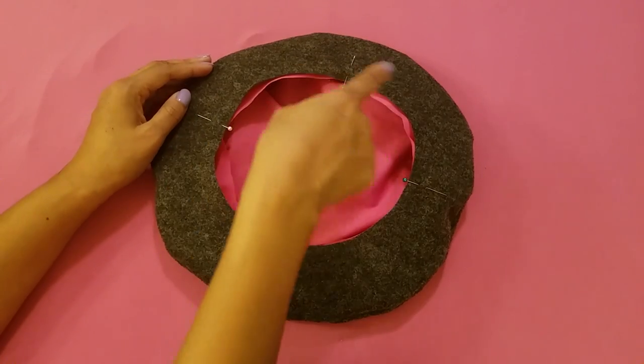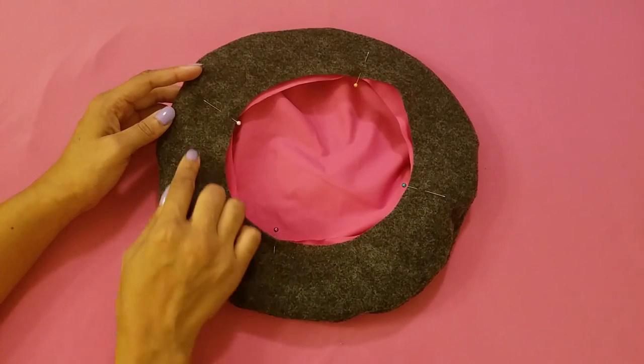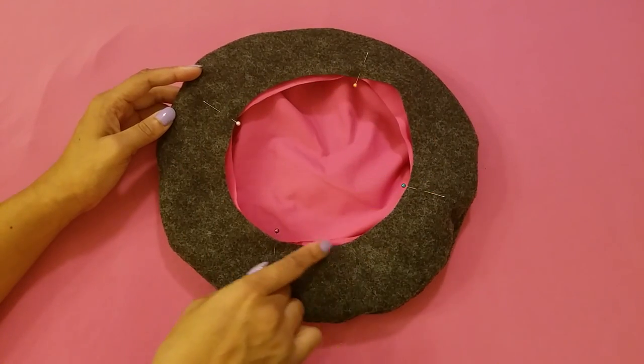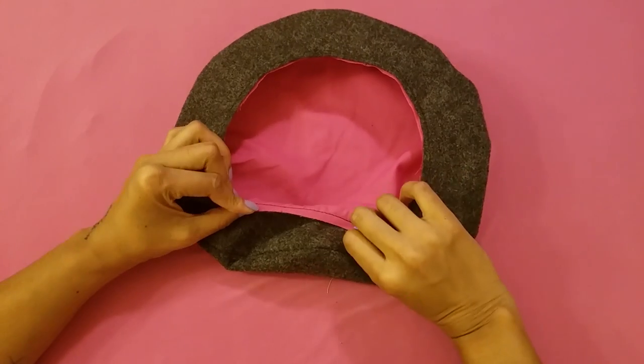So here is the four marks pinned together. Then you are going to baste stitch the hat and the lining together. And there it is basted together.